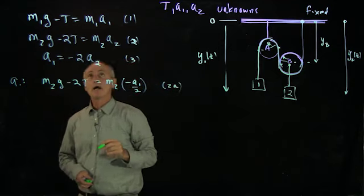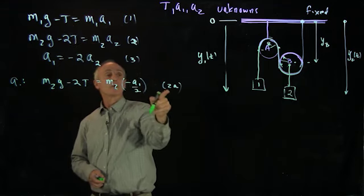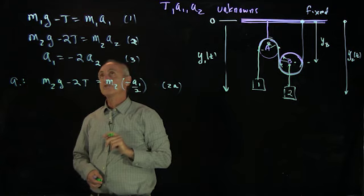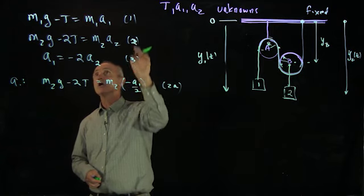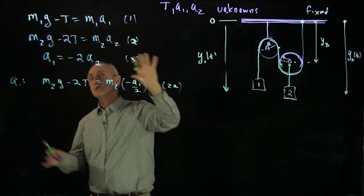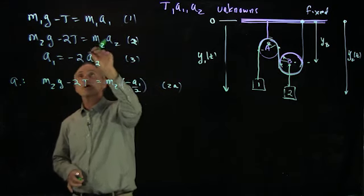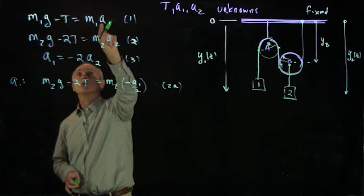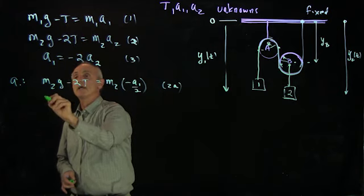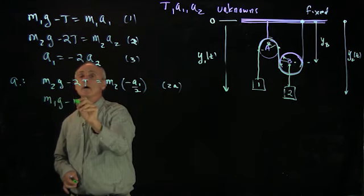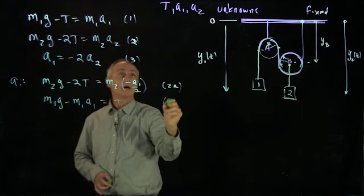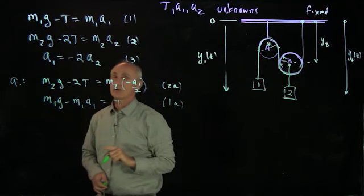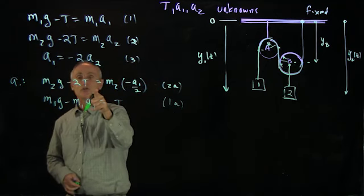And now I have equation 1 and equation 2a, two unknowns T and a1. And what I can do is I can solve for either equation, and I can make a choice what's easiest. When I look at these equations, it's easiest for me to identify what T is in terms of a1. So I'll write m1g minus m1a1 is equal to T. I'll call that equation 1a. And now I can substitute that value of T into equation 2a.